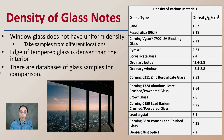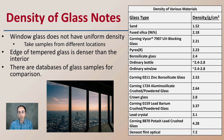There's a database of glass samples for comparison. The densest is flint or optical glass at 7.2 grams per centimeters cubed, all the way down to sand being only 1.52 grams per centimeters cubed.